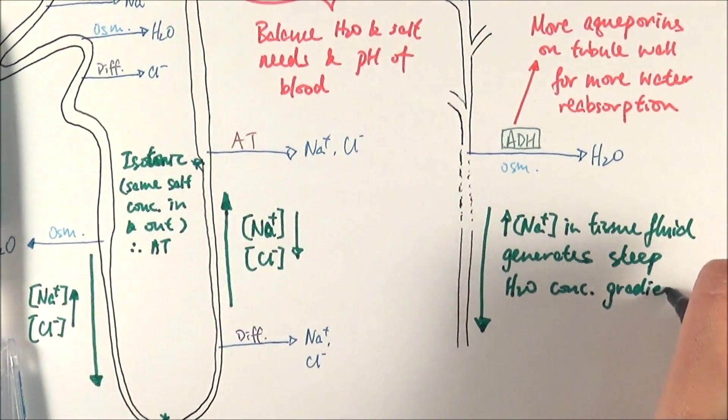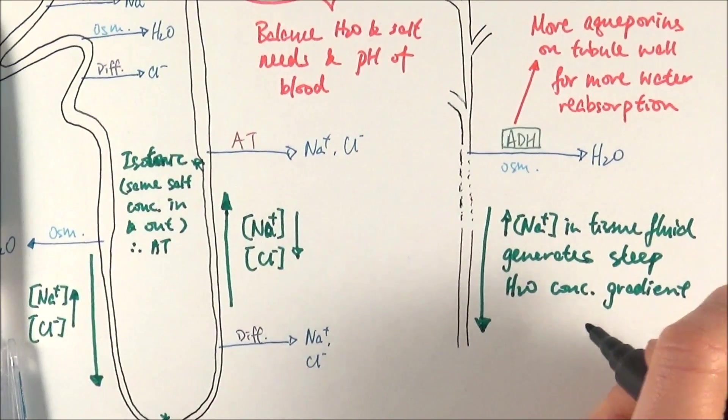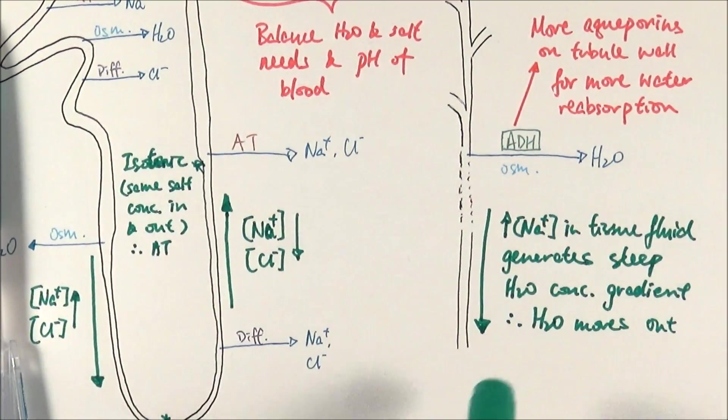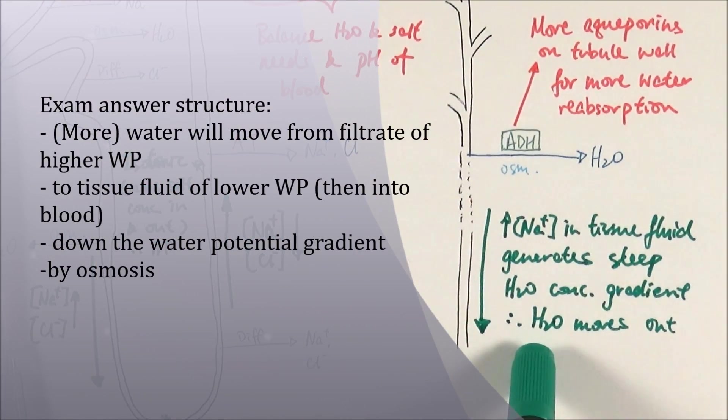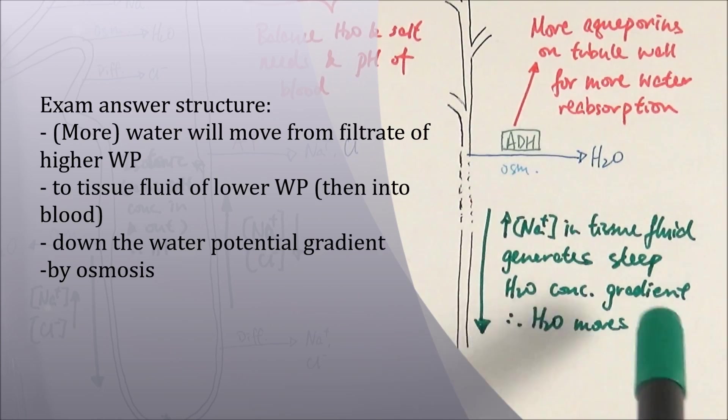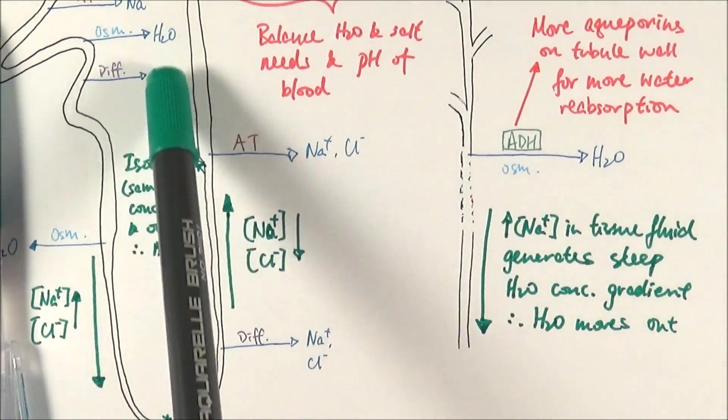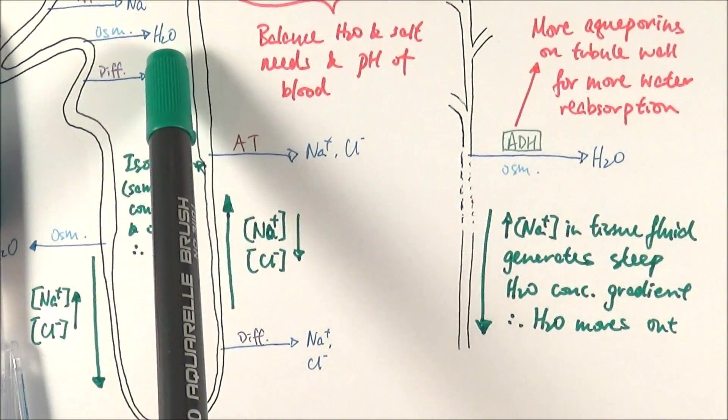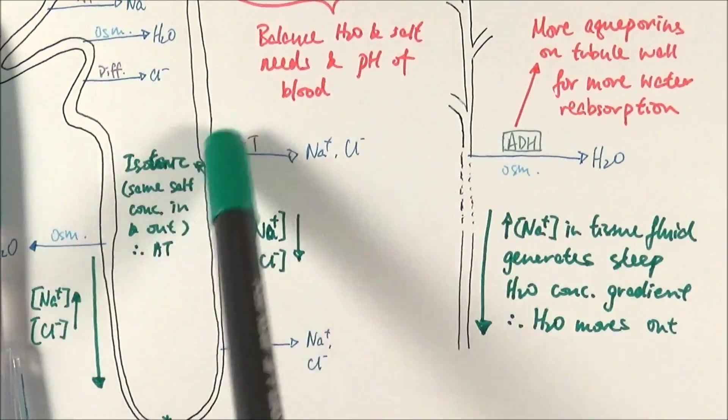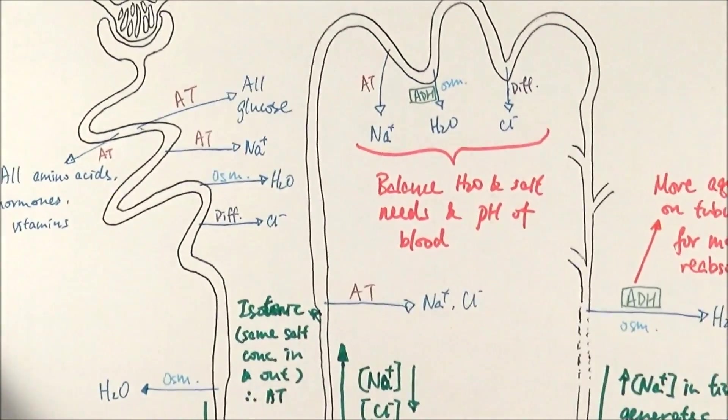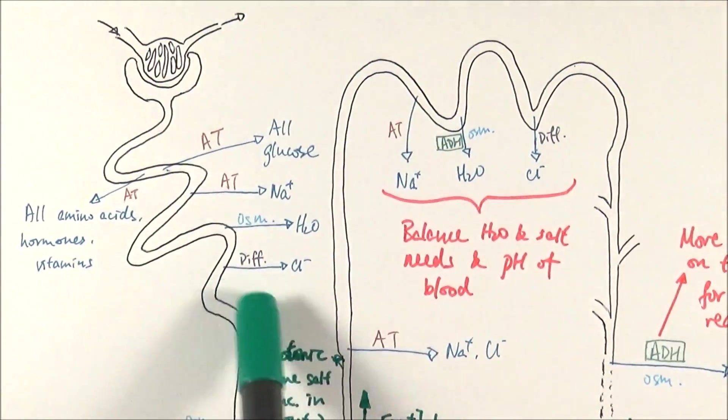If there's more ions, then it's more concentrated, meaning comparatively speaking less water. That means more water will leave the filtrate to enter the tissue fluid and then finally back into the blood. And it's the same for everything else. They all go into the tissue fluid directly around it and then go into the capillary, which is blood that surrounds it, directly from the efferent arteriole that it goes from here.